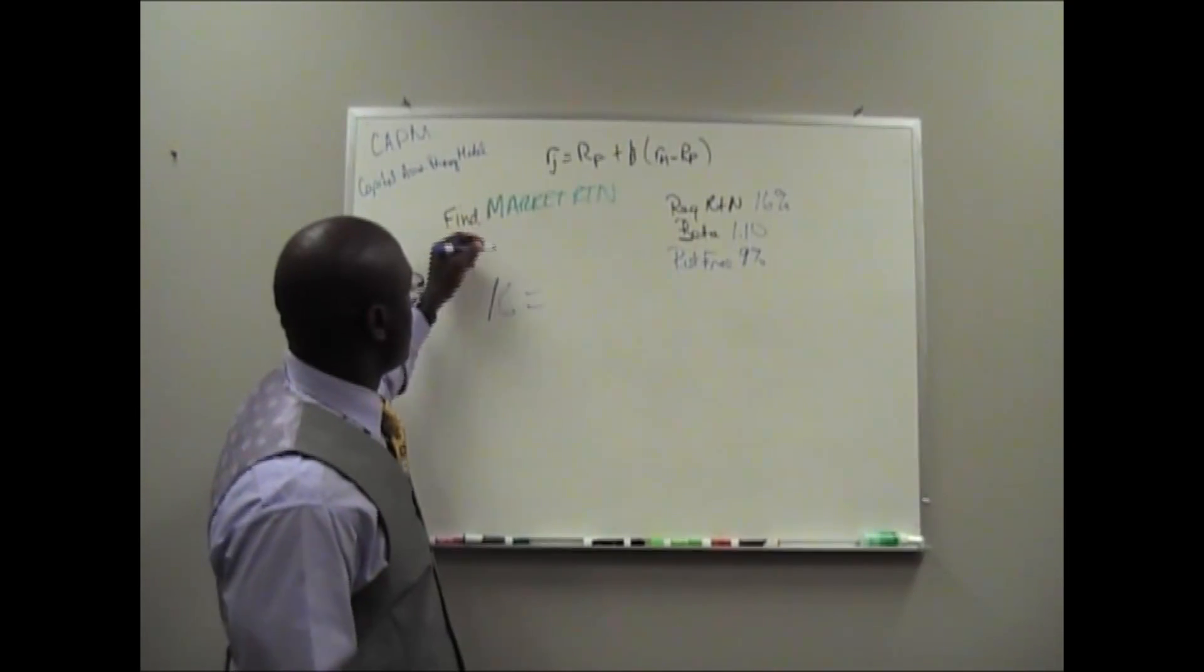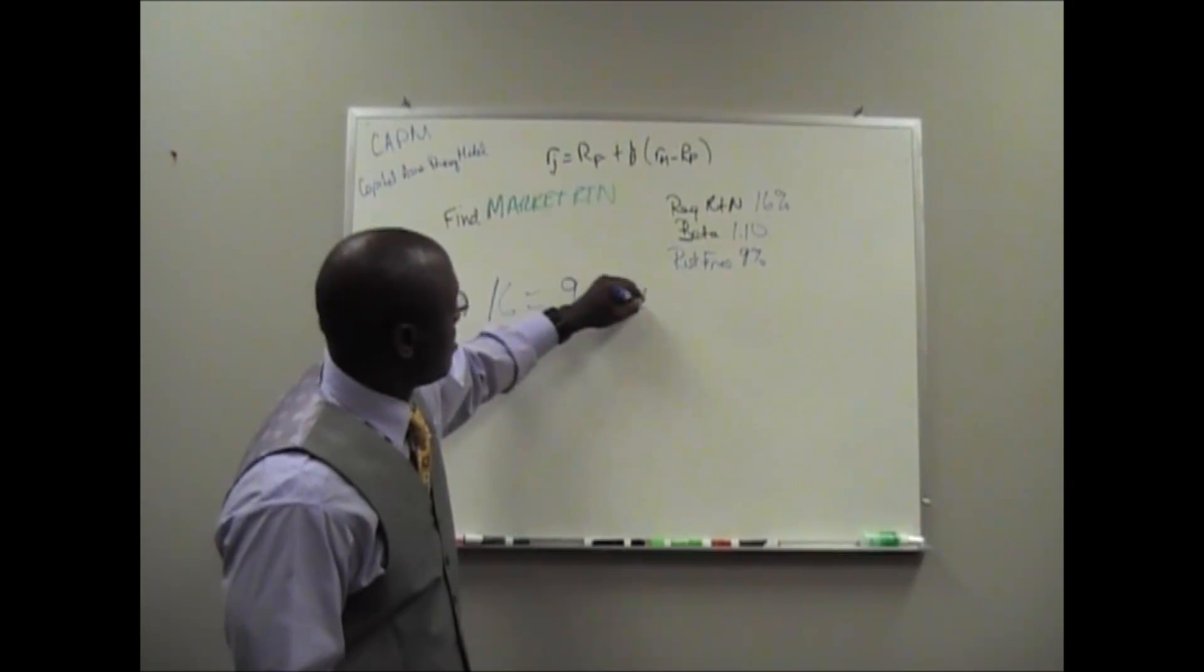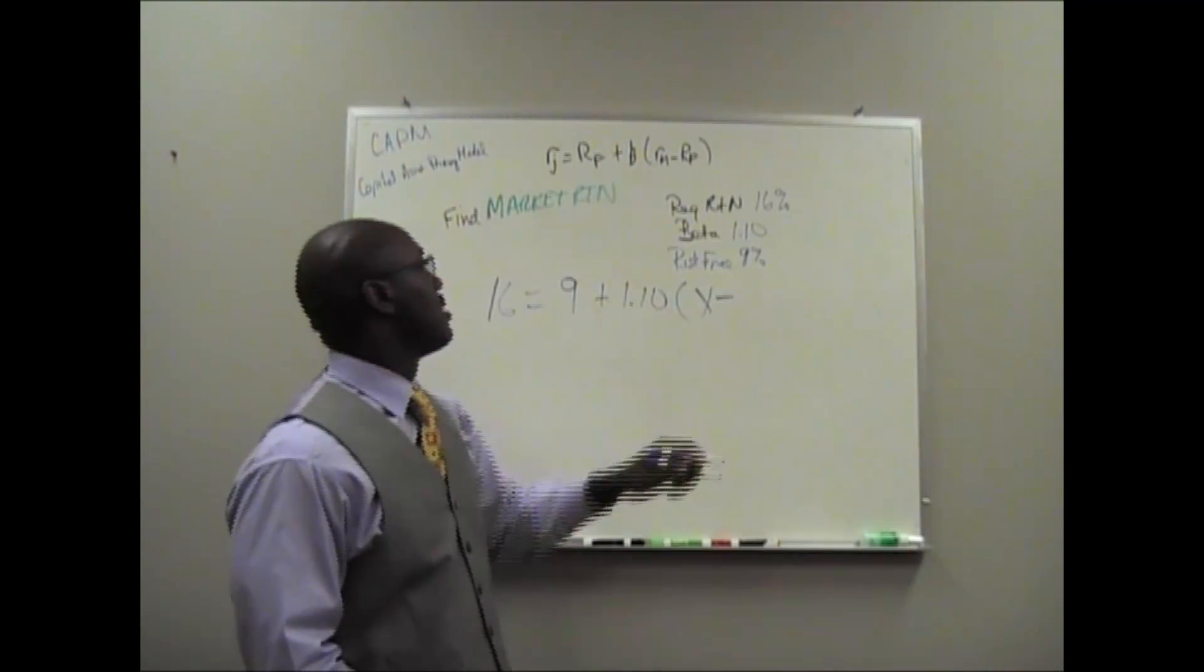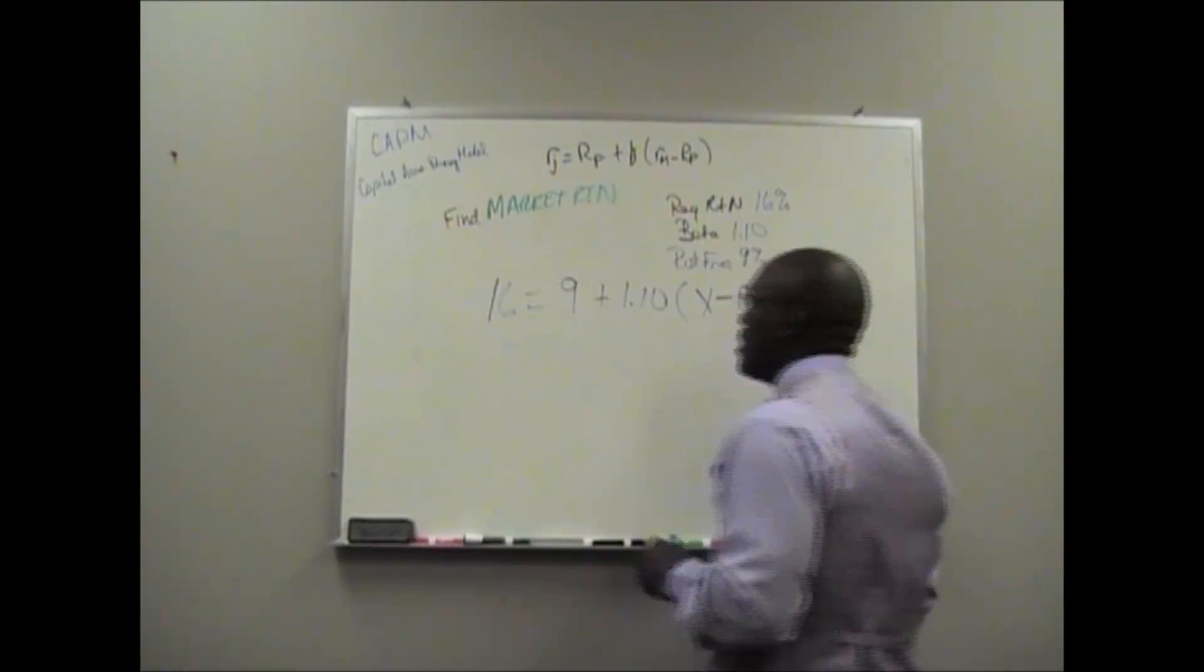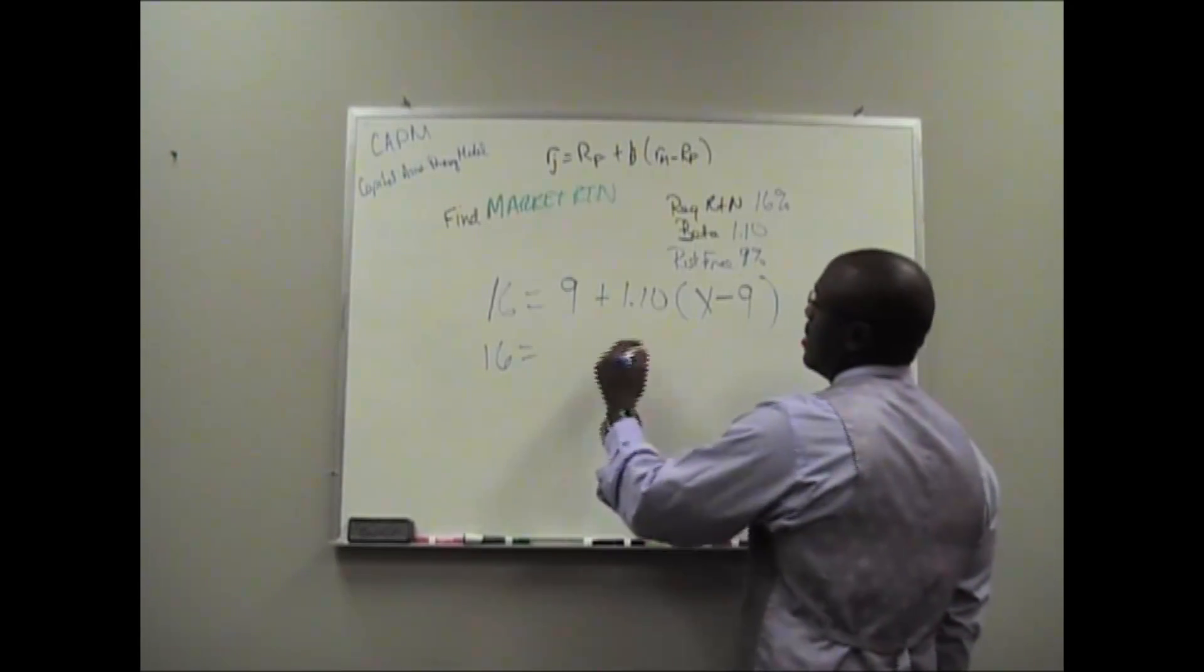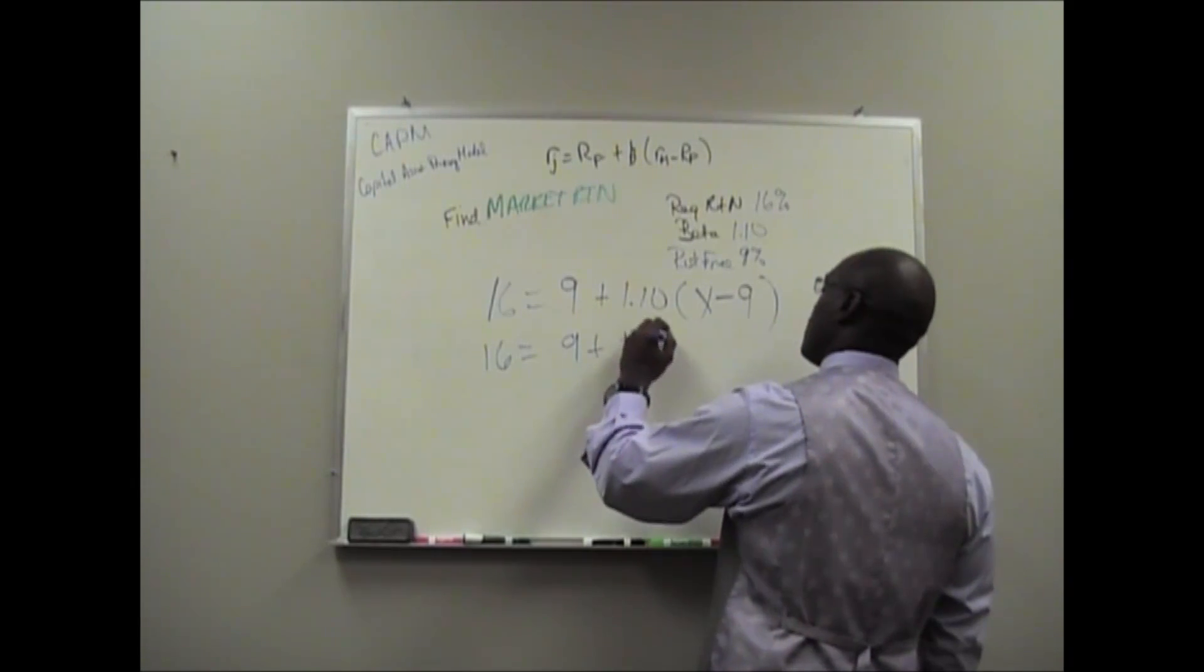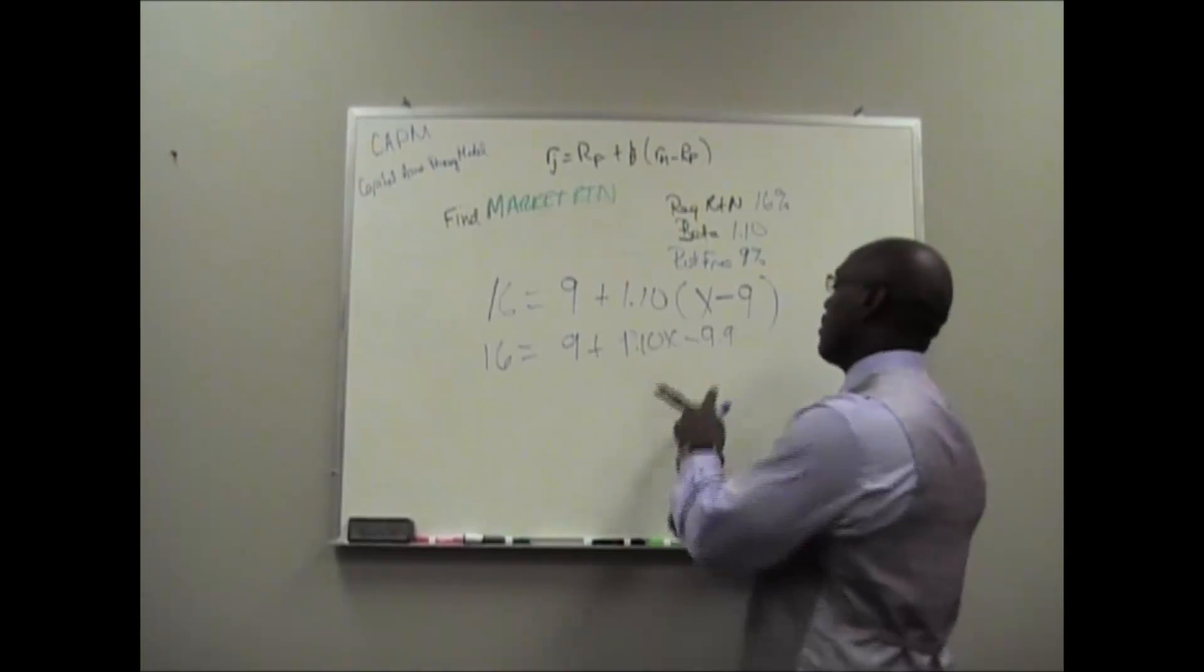16% is required return. Risk-free rate, 9% plus beta of 1.10. In parentheses, we have X to denote the required return minus the risk-free rate. Then we do the math. 16 equals 9 plus 1.10X minus 9.9. Combine like terms.